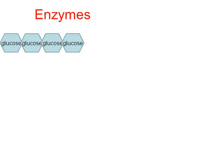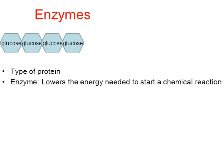As I wrap up this video, I want to give special attention to a category of protein called enzymes. Enzymes are a type of protein. Their job — and there are thousands of different types of enzymes — is to lower the energy needed to start a chemical reaction. Without enzymes, cells would need a lot more energy to achieve their needs. With enzymes, cellular functions are performed much more efficiently.